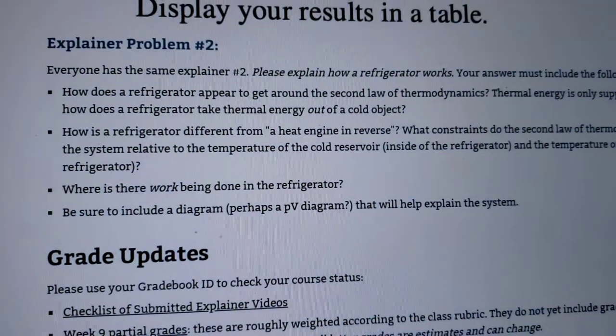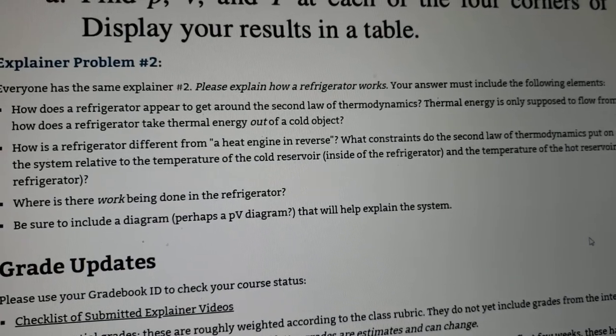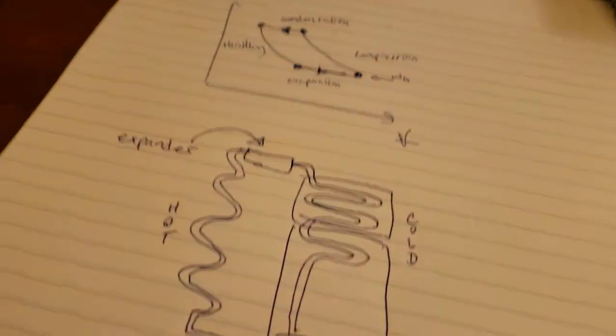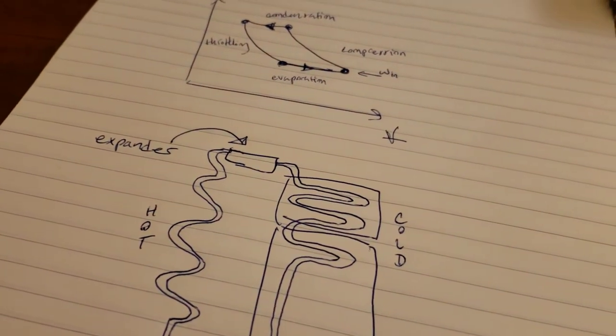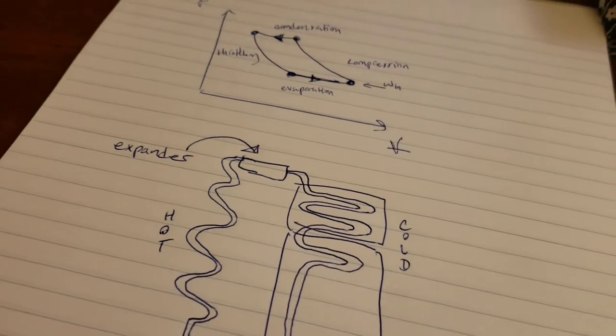So going off or focusing on this first bullet point, which says how does the fridge appear to get around or break quote-unquote the second law of thermodynamics. So the second law states that the system has to go from hot to cold, or it can only go from hot to cold spontaneously, which is true.